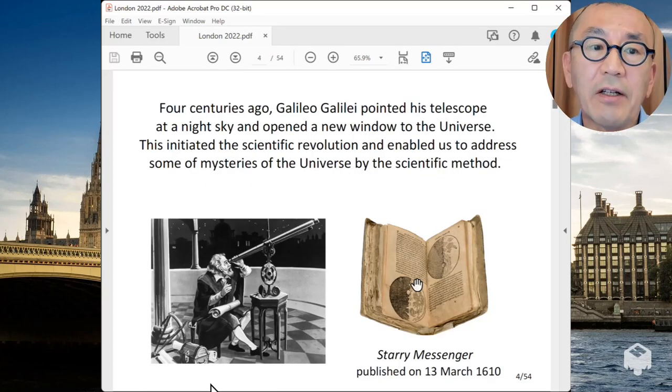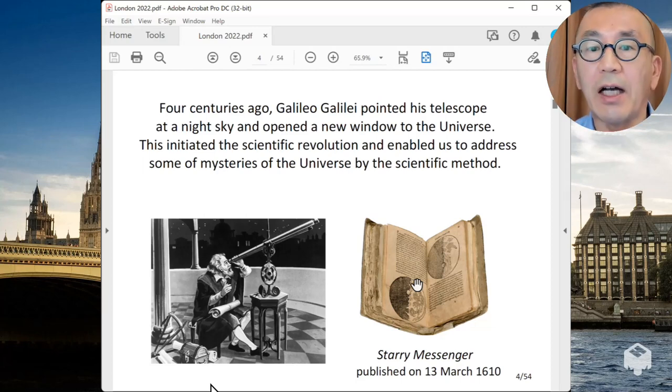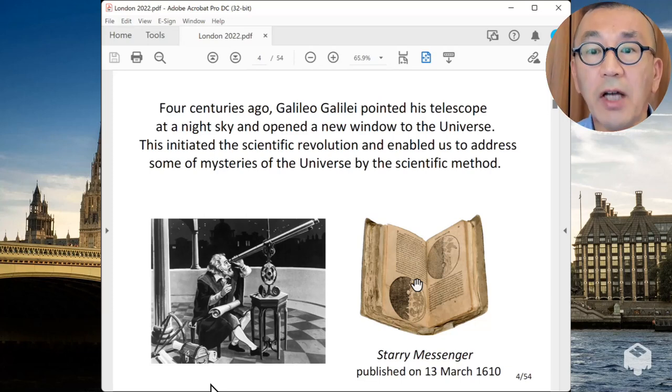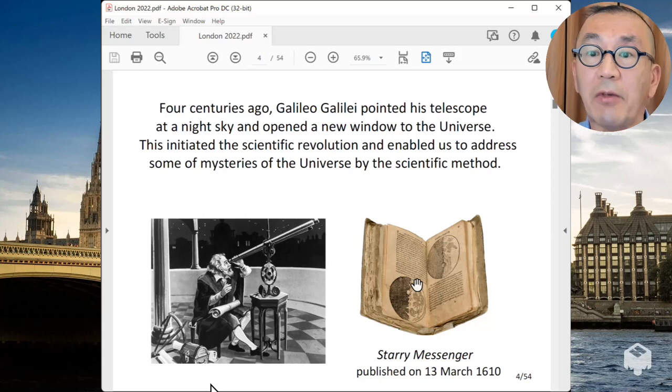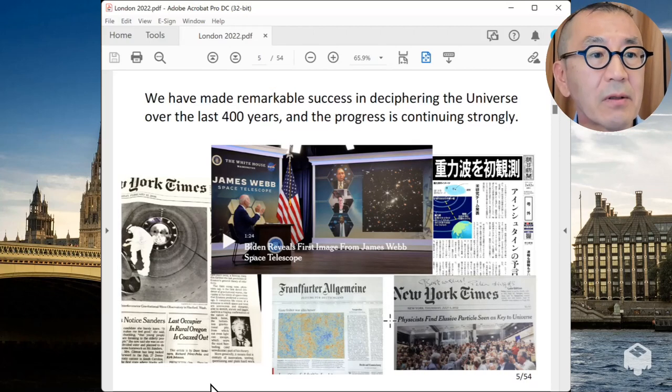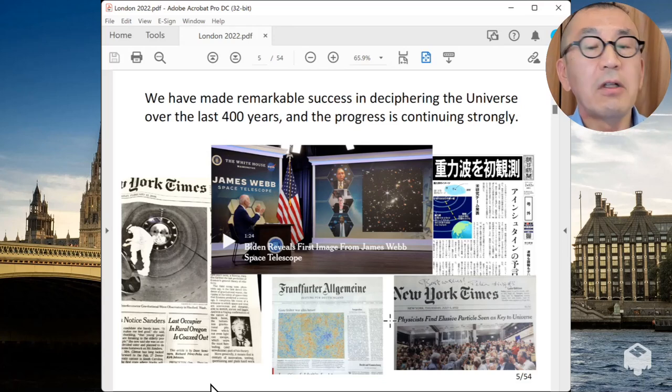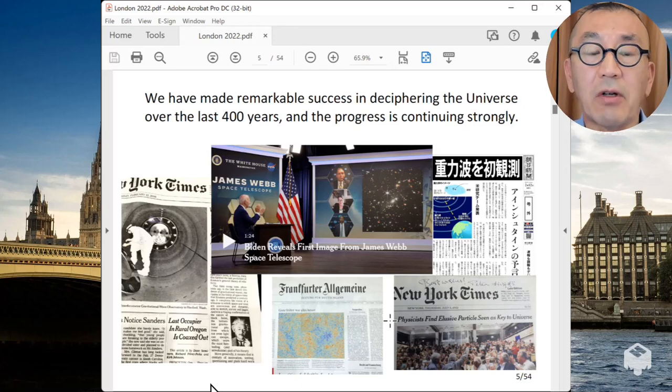Four centuries ago, Galileo Galilei pointed his telescope at night sky and opened a new window to the universe. It opened a new way to understand the universe that is by scientific method. His discovery initiated the scientific revolution and enabled us to address some of the mysteries of the universe by scientific method. I would like to explain some of the latest knowledge we have gained from this approach. And then we are going to translate that into the movie. In fact, for the last 400 years, we have made remarkable success in deciphering the universe, and the progress is continuing very strongly.